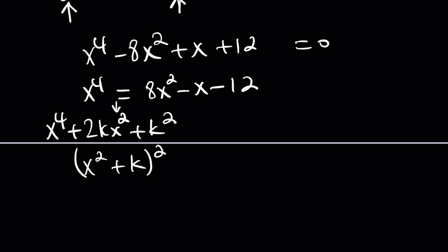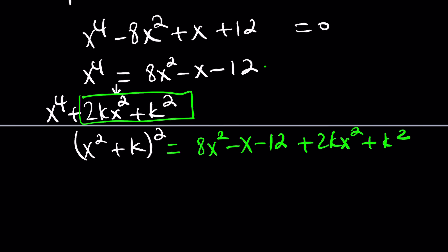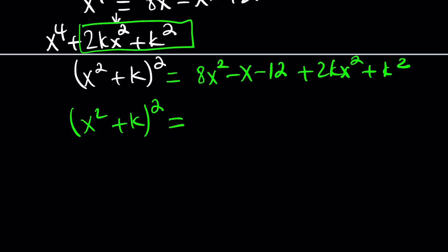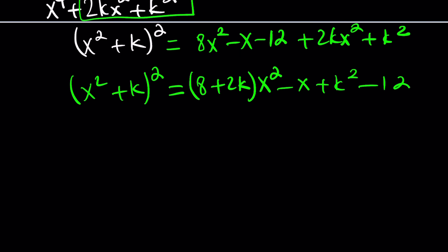We're going to be adding 2kx squared plus k squared. Because this turns it into x squared plus k quantity squared. But why did I add that kind of thing? Because I want to keep the left-hand side kind of quadratic-ish. And right-hand side will always be quadratic because I'm adding x squared. That's just a way to solve quartics. There's at least two methods. This is one of them.